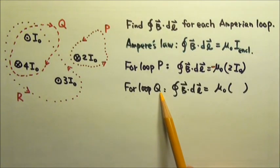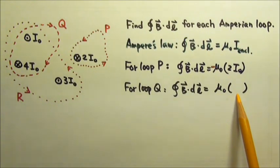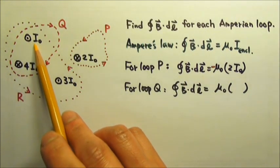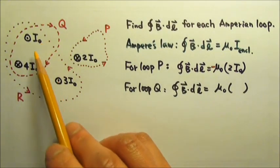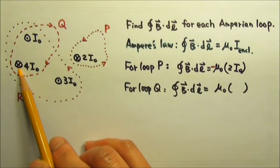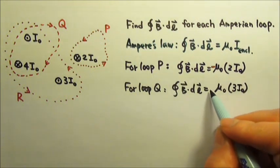For loop Q, this integral equals μ₀ times the enclosed current—the net enclosed current. Inside loop Q, there is one I₀ coming out of the paper and 4I₀ going into the paper. So the net current is 3I₀ going into the paper. We still need to determine the sign though.